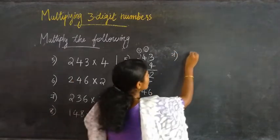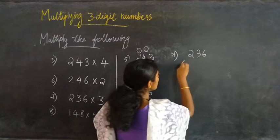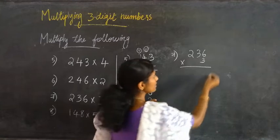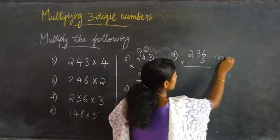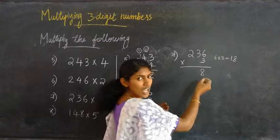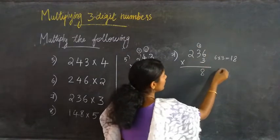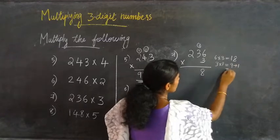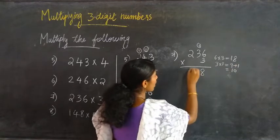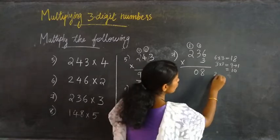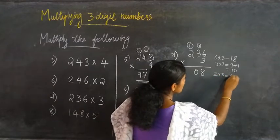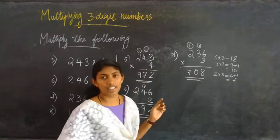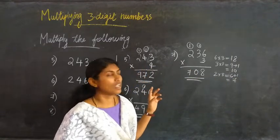7th question: 236 into 3. First we have to multiply 6 by 3. That is 6 into 3 equal to 18. Writing 8 here and 1 is carried over. Then 3 into 3 equal to 9, plus 1 is 10. Writing 0 here and 1 is carried over. Then 2 into 3 equal to 6, plus 1 is 7. So 236 into 3 equals 708.